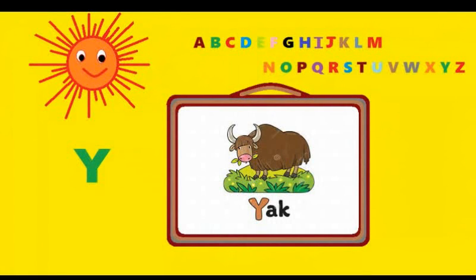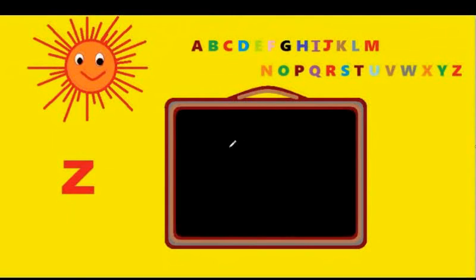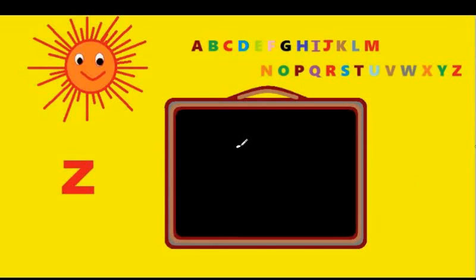Now the last letter, Z. You have to go across the tree, take the line down to the other side, and again cross the tree. Let's watch it again: draw a sleeping line, draw a line that comes from right to left, and draw a sleeping line. That's Z. Z is for zebra.